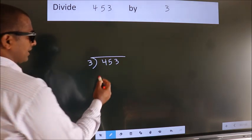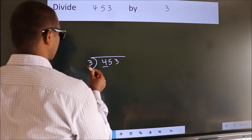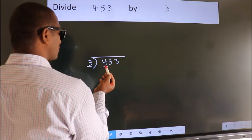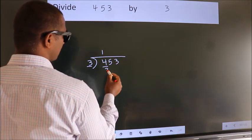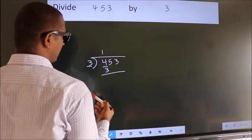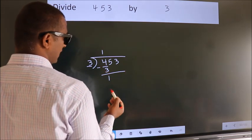Next, here we have 4, here 3. A number close to 4 in 3 table is 3 once 3. Now, we should subtract. We get 1.